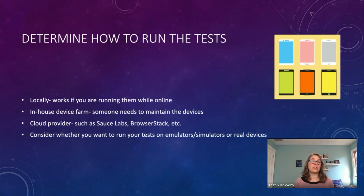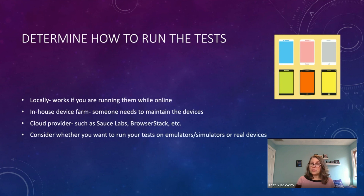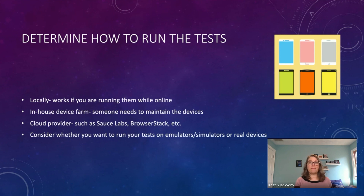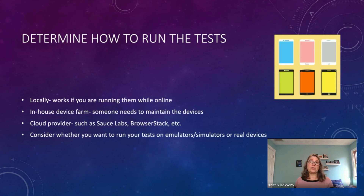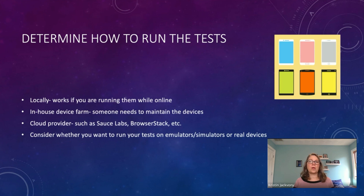With Sauce Labs, they have some physical devices but mostly use emulators and simulators. That brings us to the next question: whether to run tests on emulators and simulators or real devices. Emulators and simulators will probably be faster with fewer points of failure because they're not real — just a simulation. But you might not be able to test more complicated features like interacting with a camera. On real devices you can interact with the camera, SMS, file uploads, and similar features, but there will be more points of failure since it's a real device on a real network.